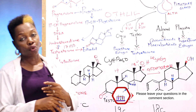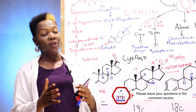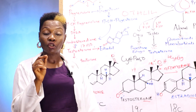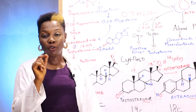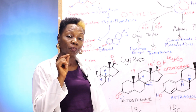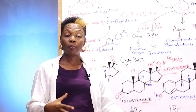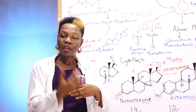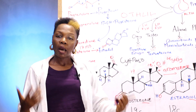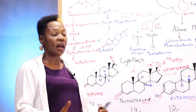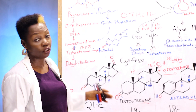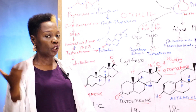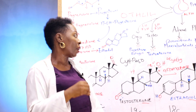Estradiol plays a major role in the development of female secondary characteristics and also plays a role in males, though it is found in very minute quantities in males. It is predominantly a female hormone responsible for the development of female secondary characteristics such as enlargement of the hips. Estradiol also plays a major role in the menstrual cycle, which we will be looking at subsequently.